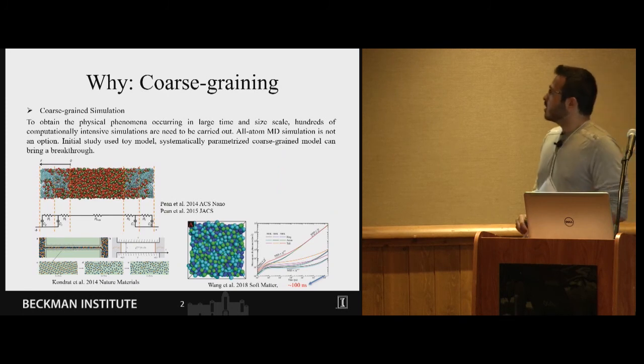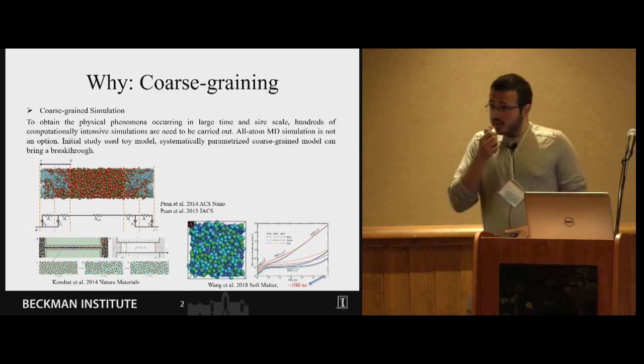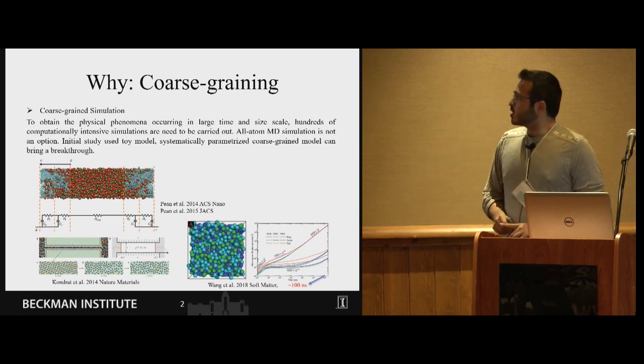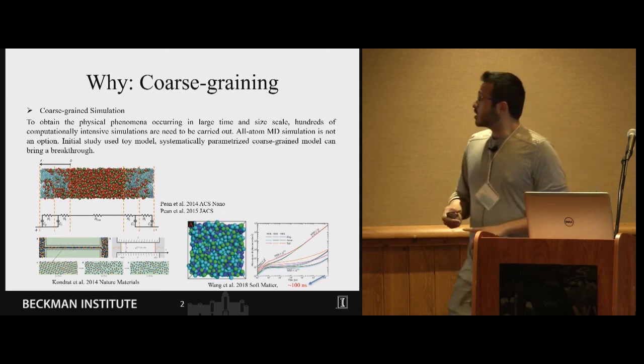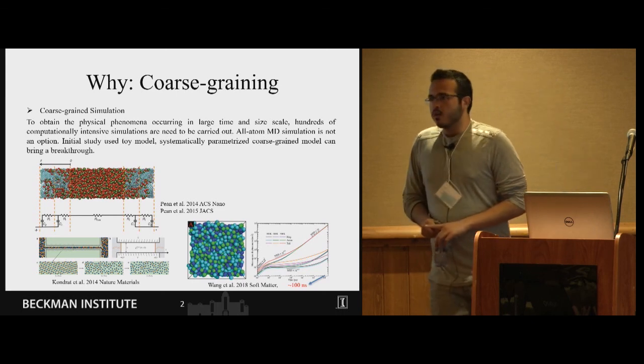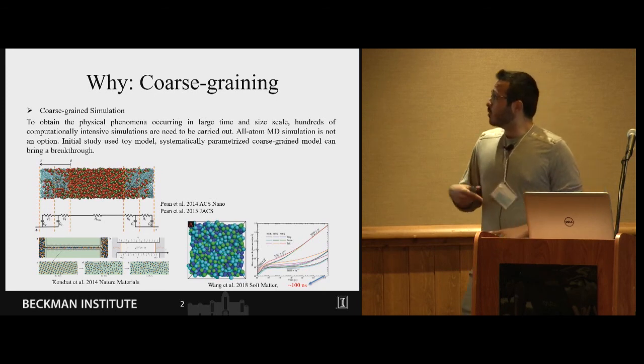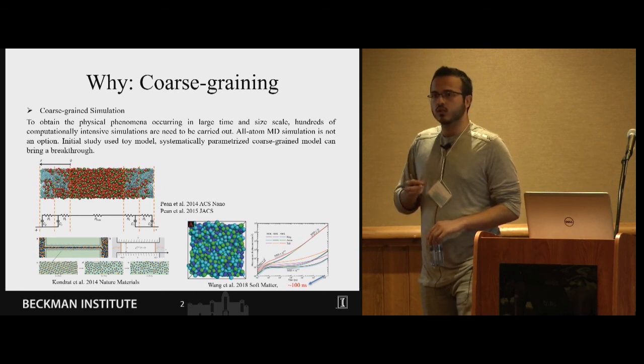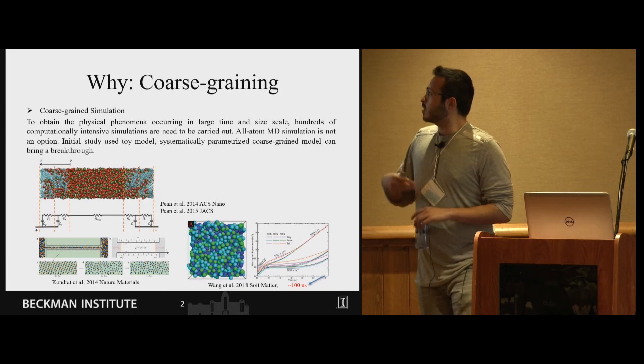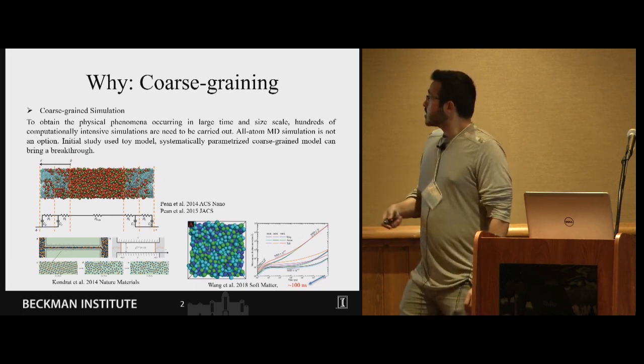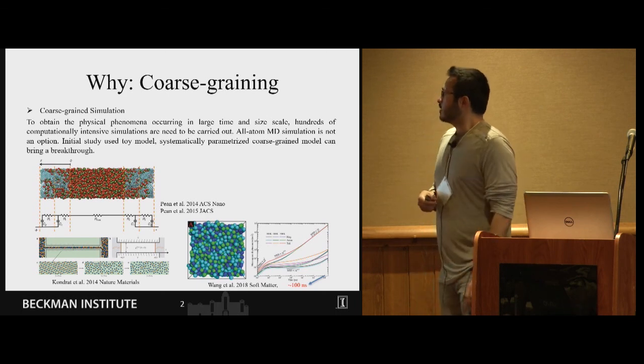But why doing coarse graining while not trying to do all atom MD simulation? Basically these systems are highly charged so they have very slow dynamics and many physical phenomena occur in large time and size scales and it demands different multiple simulations of the same ionic liquid over and over. For example in case of supercapacitors we need to study the system at different voltages. So all atom MD simulation is not a clever idea to go after this type of study.